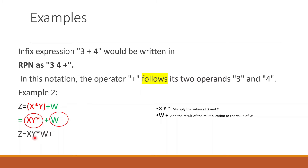Now let's take another example. Here we have three operands: X, Y, and W. We have to follow the precedence order, moving from left to right. The moment I encounter the first operator, I move it to the right side, so this expression becomes X Y × (times). Now I have solved this part and circled it. The remaining unsolved part I solve again left to right — the second operator shifts to the right. So the final RPN is X Y × W plus.